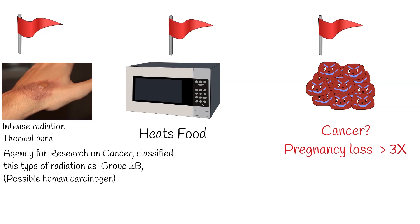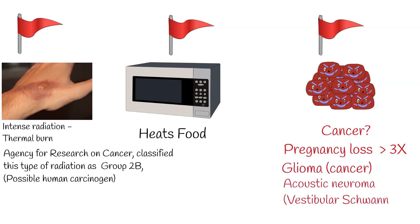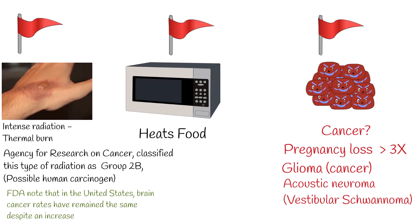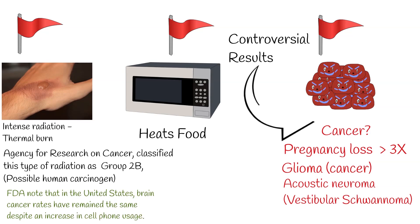In 2011, the International Agency for Research on Cancer classified this type of radiation as Group 2B — a possible human carcinogen. This classification was based on an increased risk for glioma and acoustic neuroma, a type of brain cancer, related to cell phone use. However, the FDA notes that in the United States, brain cancer rates have remained the same despite an increase in cell phone usage.